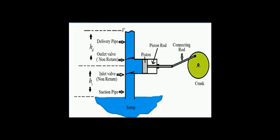Here is the working of a reciprocating pump, because the air vessel is used in the reciprocating pump. In the reciprocating pump there are numerous components. One is the suction pipe. There are two non-return valves — one is known as the suction valve and one is known as the delivery valve. There is one delivery pipe, one piston, a piston rod, a connecting rod, and a crank which converts rotatory motion into reciprocating motion.